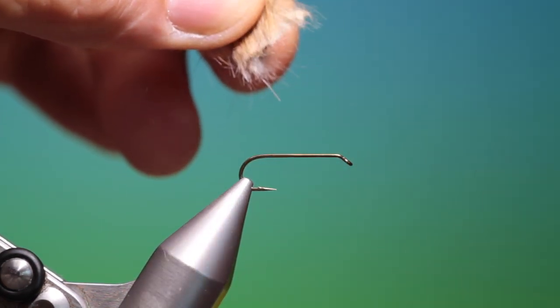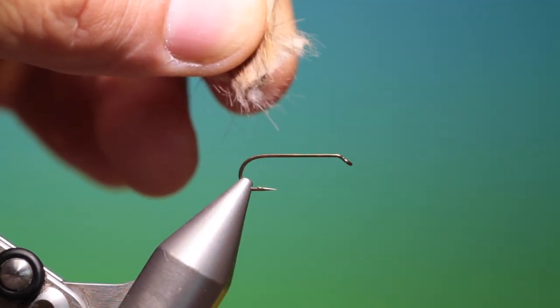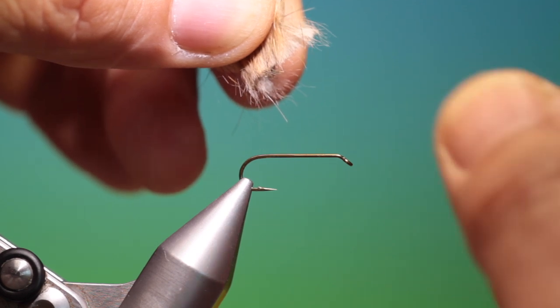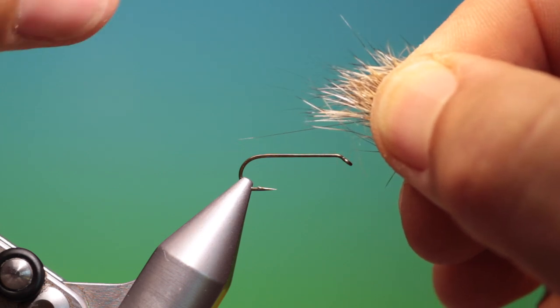Then what we do, and all this that you pull off now goes into another little soy sauce box for nymph dubbing. But what we want here is the guard hairs.